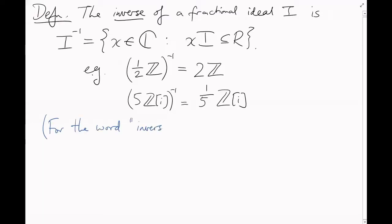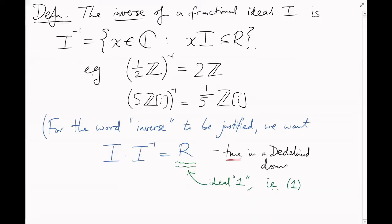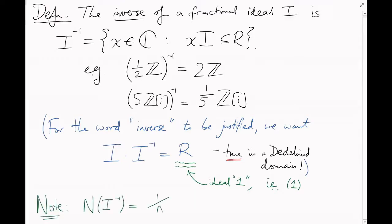The reason this is tentative is that, even though we've called these things fractions and inverses, it's not completely obvious from their definition that they behave the way you'd expect. What we want is that if I is an integral ideal, then I times I^(−1) should equal whatever the ideal equivalent of 1 is — that is, the ideal generated by 1, which is just the whole ring. Luckily, in a Dedekind domain, this turns out to always be true. So we really do have a working notion of fractions here. Because the ideal norm is multiplicative, the norm of I^(−1) is just 1 over the norm of I.